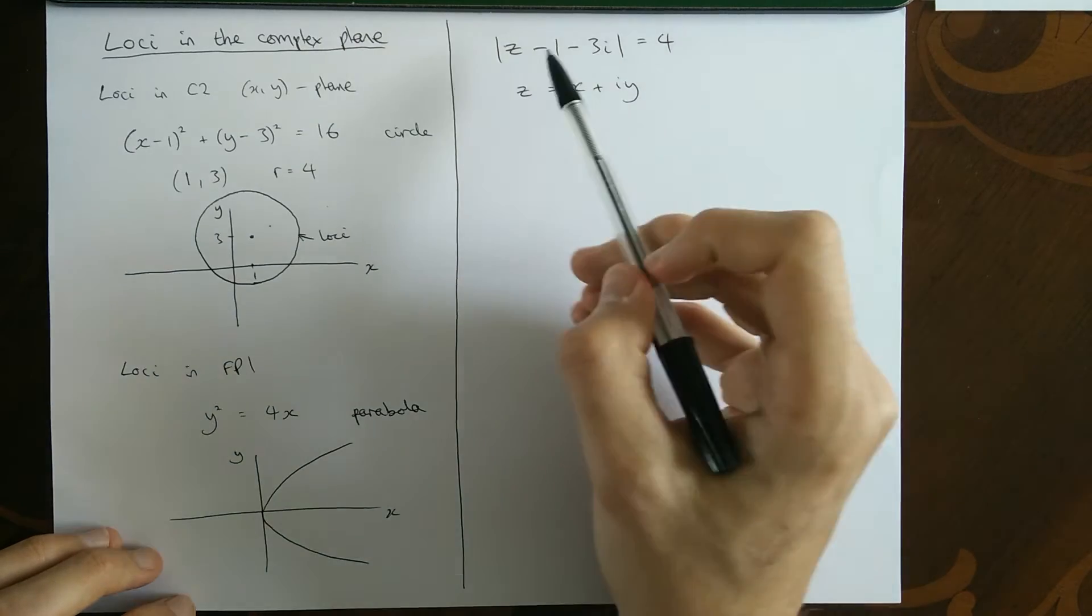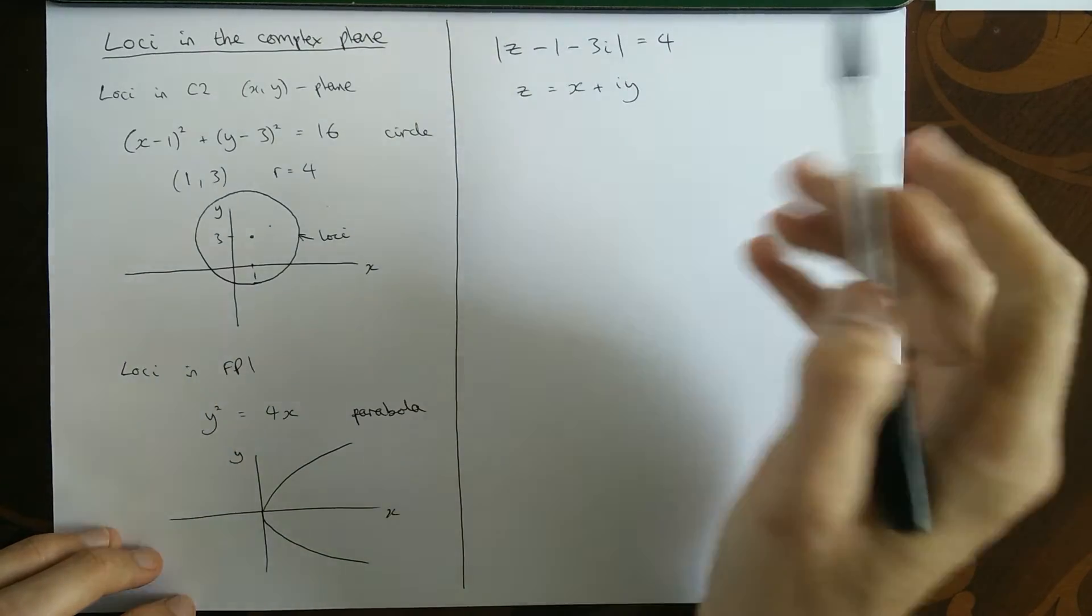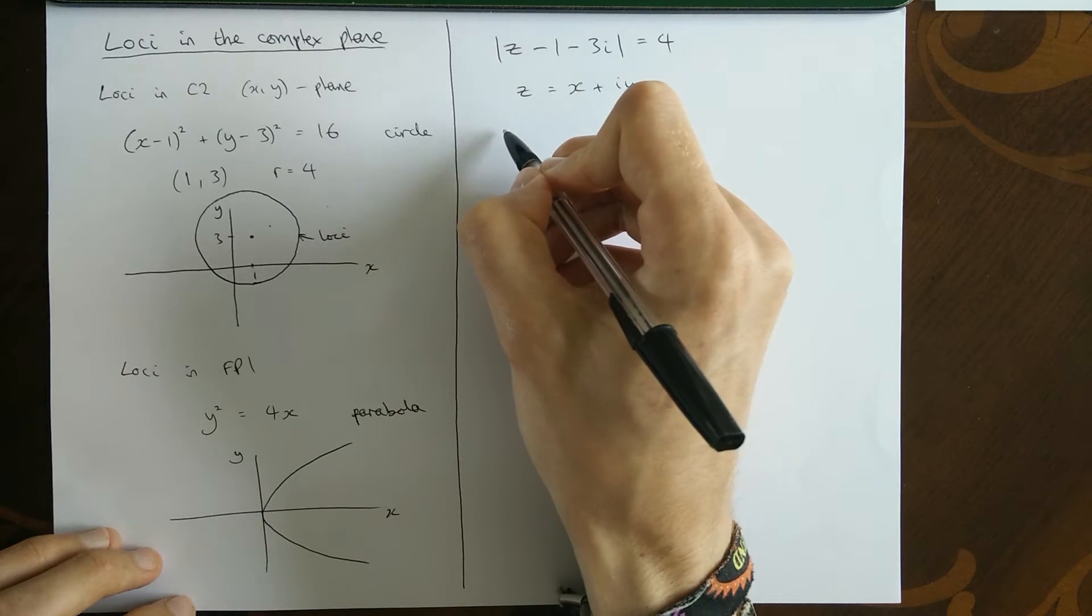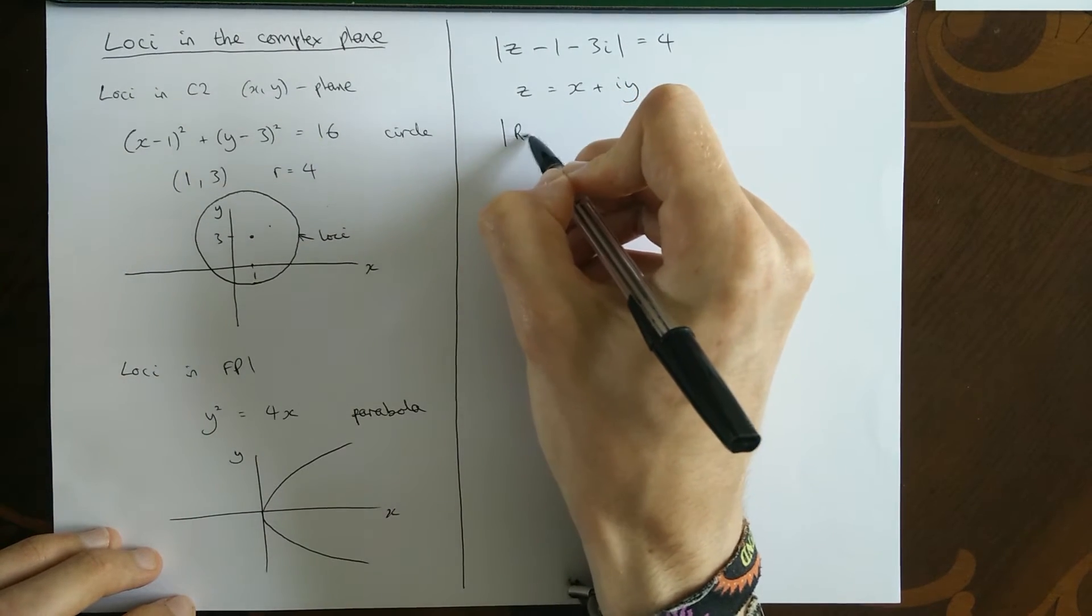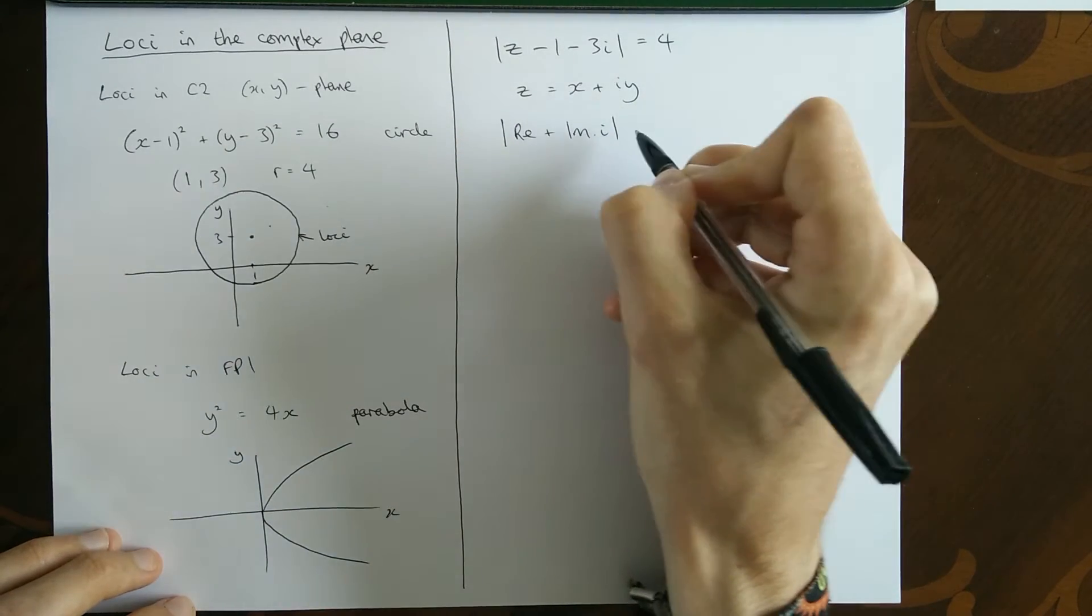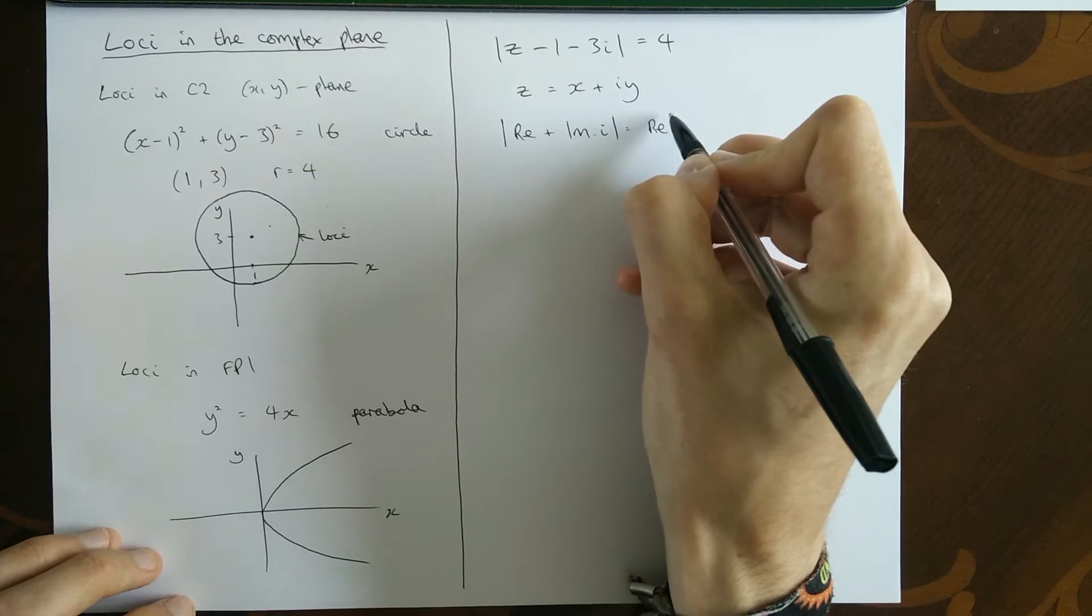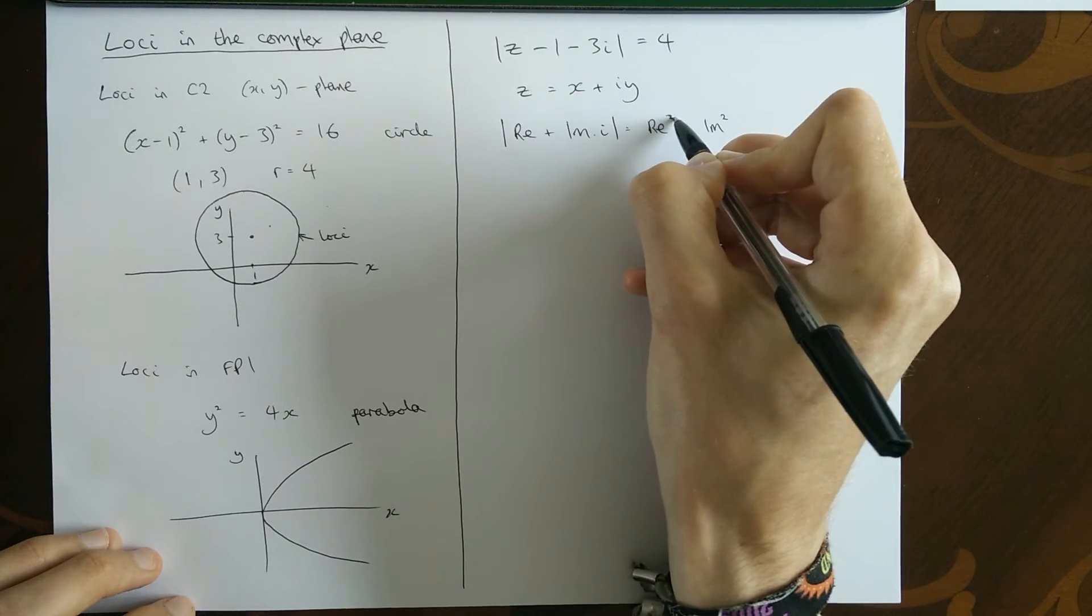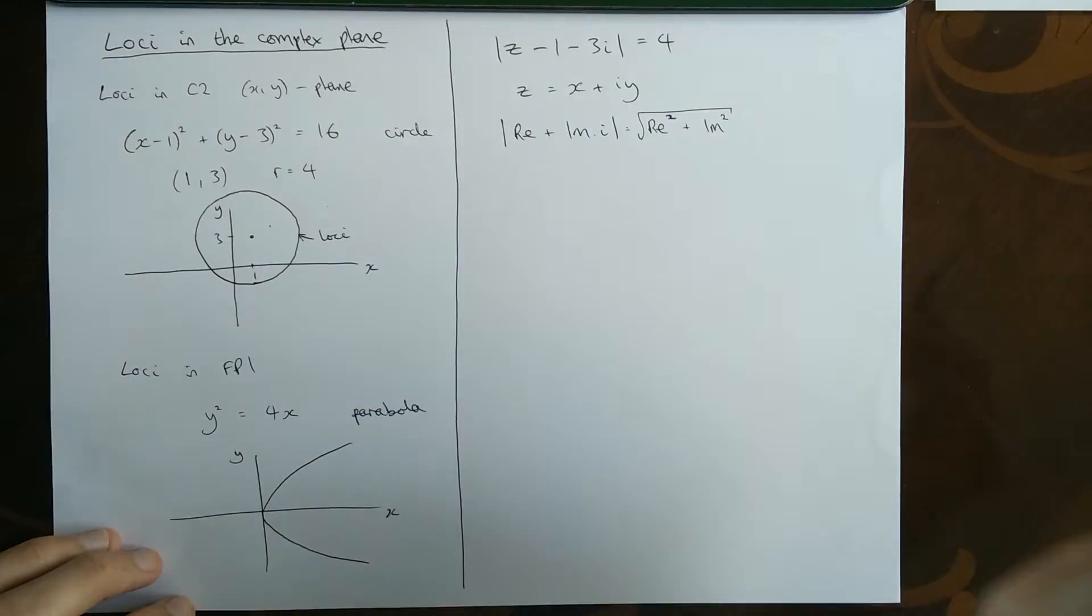We're going to substitute this in here in a second. Before we do that, I do want to talk about what this modulus sign means, just in case there's any confusion. So you've done working out the modulus of z before. But when you work out the modulus of a number that's complex, you take the real imaginary parts of that complex number. You square the real part. You square the imaginary part. And then you square root the answer.